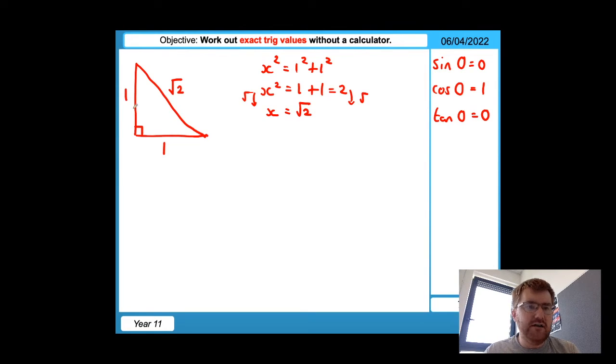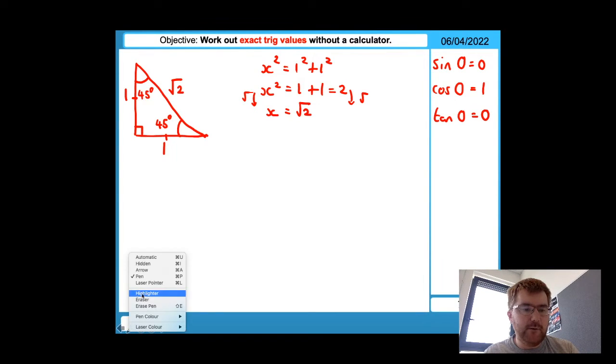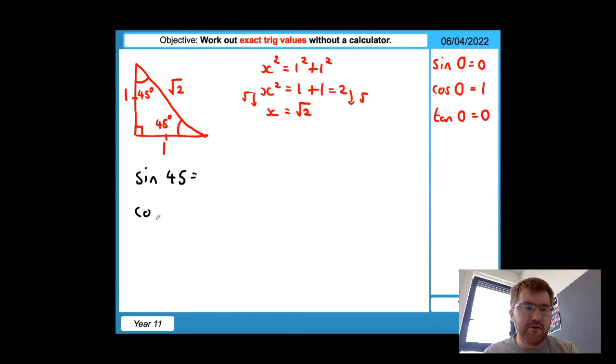And because this is one and this is one, this is an isosceles triangle, which means that this angle and this angle have to be the same. Well, if this is 90, triangles add up to 180, so these two have to add up to 90. So each one is equal to 45 degrees. And in my mind, I know this triangle off by heart. And by knowing this triangle off by heart, I can work out the following calculations. So I can work out what sine 45 is, I can work out what cosine 45 is, and finally, I can work out tangent of 45 as well.